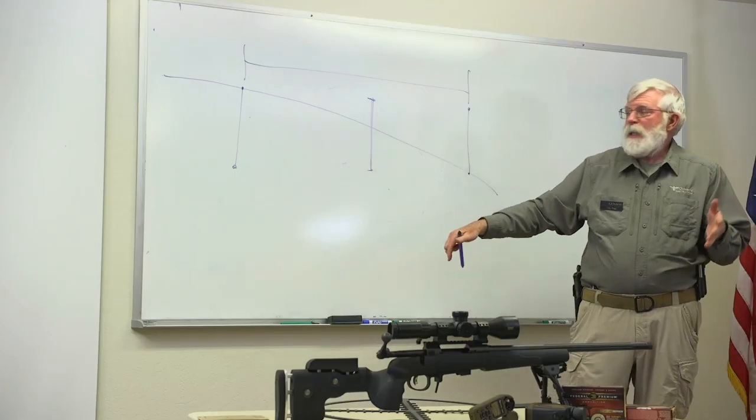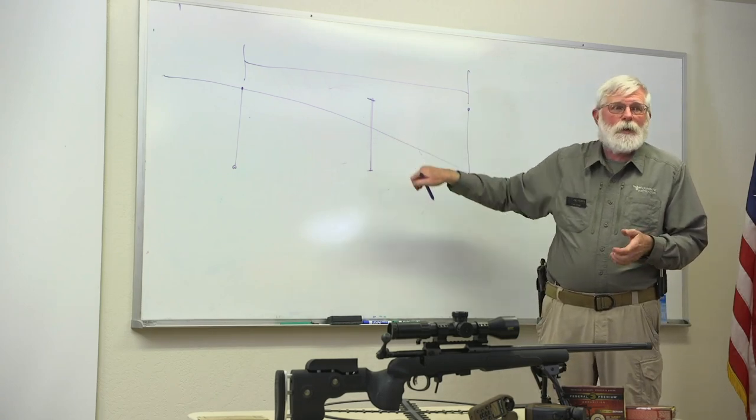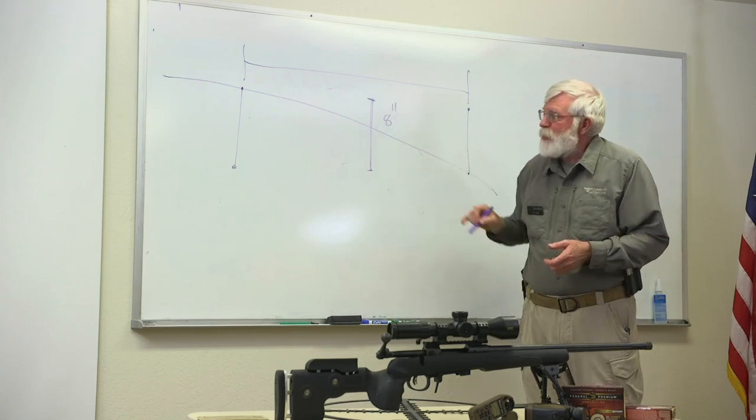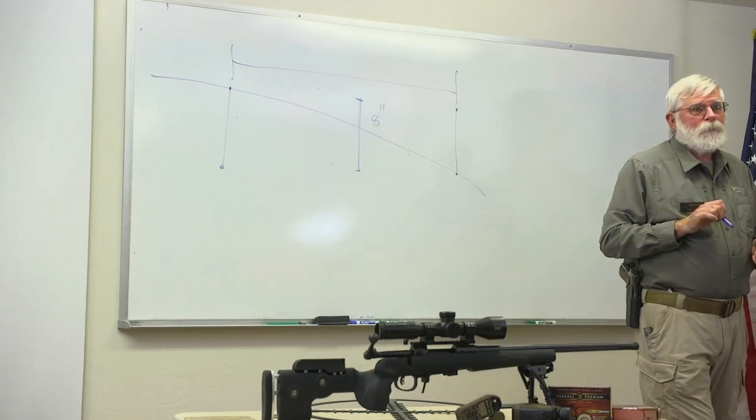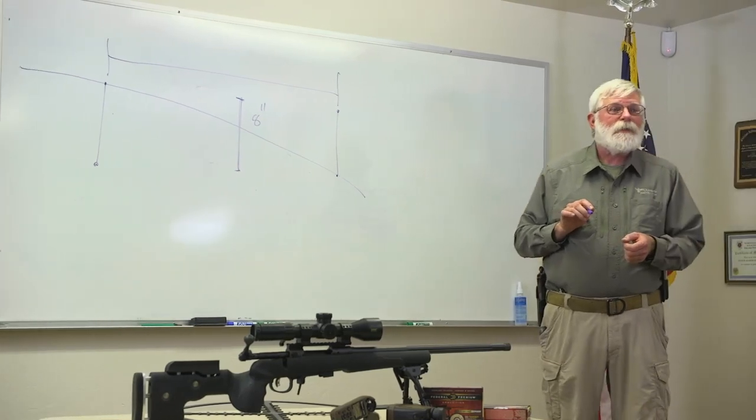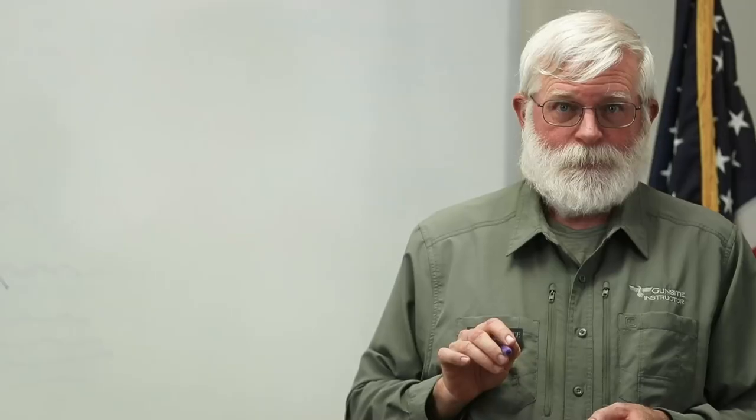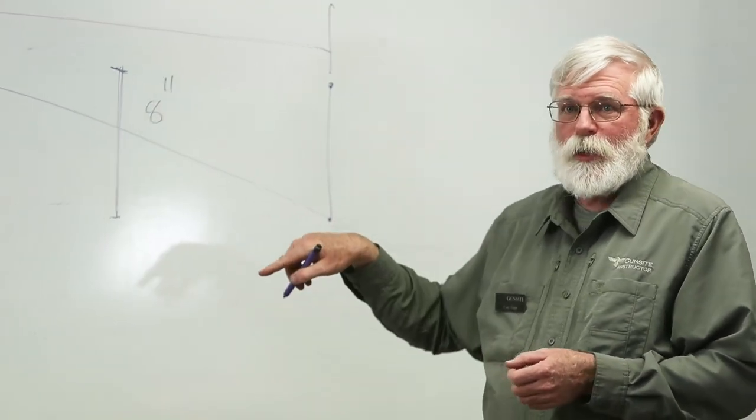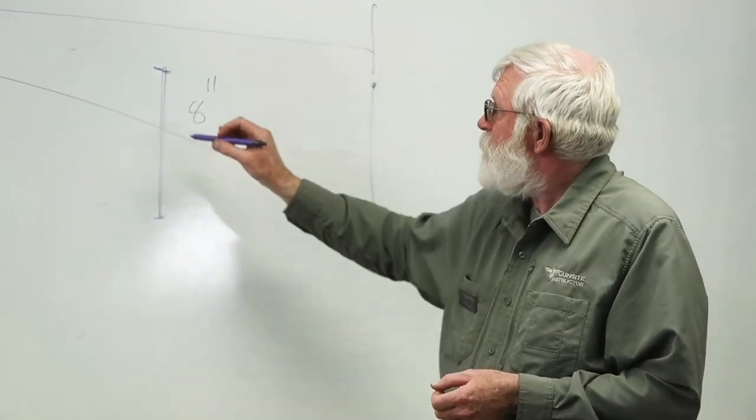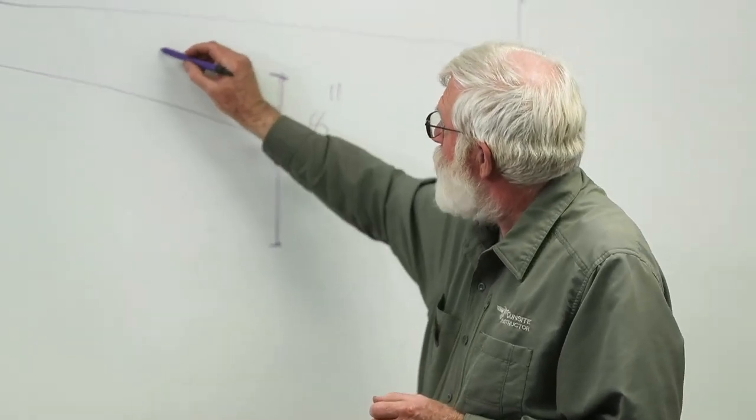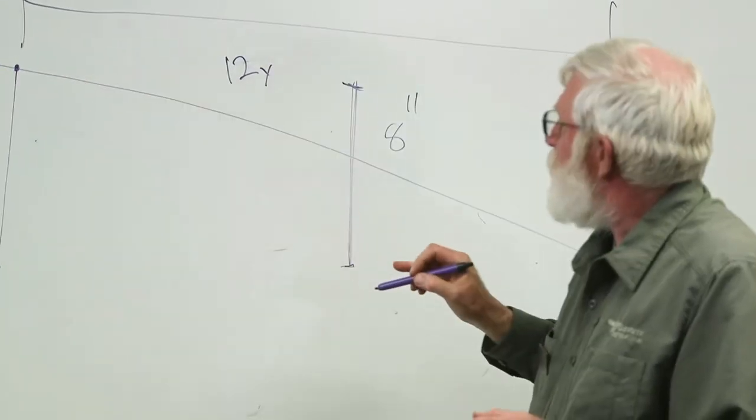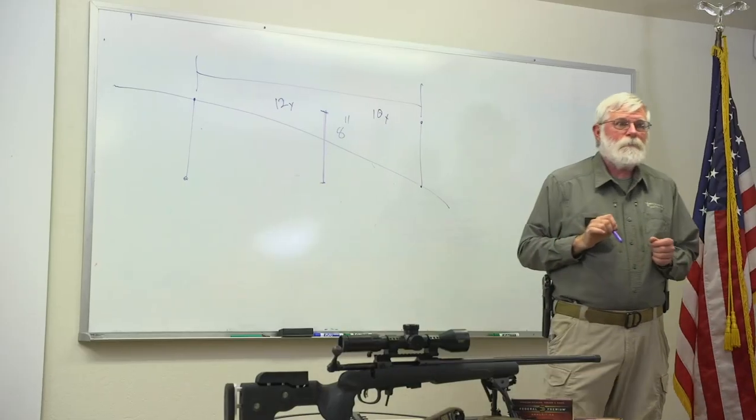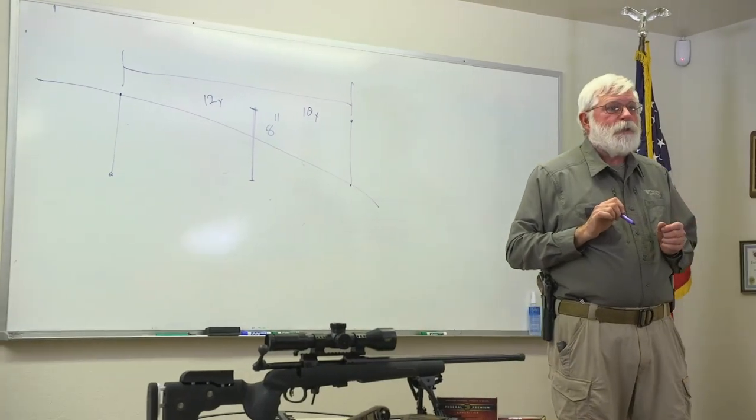On the other hand, if I put this target at 600 yards and the target is only eight inches tall, my danger space starts to get really really short. For an eight inch target and a standard 308 rifle round, your danger space is about 12 yards in front and 10 yards behind. That's all you have.